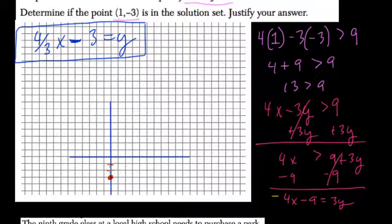Slope is 4 thirds. So up 4, 1, 2, 3, 4, over 3, 1, 2, 3. And y is less than, less than, not less than or equal to, just less than.